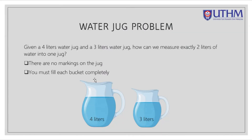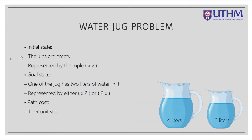Given a 4-liter water jug and a 3-liter water jug, how can we measure exactly 2 liters of water into one of the jugs? We should know that there are no markings on the jugs and we must fill each bucket completely. Our initial state is that both jugs are empty, represented by the pair (x, y), where x is the 4-liter jug and y is the 3-liter jug. Our goal state is to have 2 liters in one jug, represented by either (0,2) or (2,0).